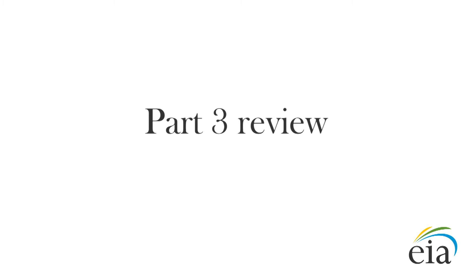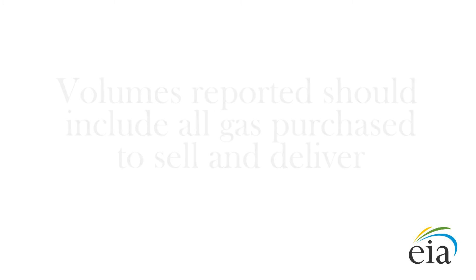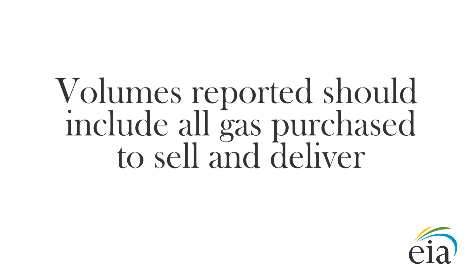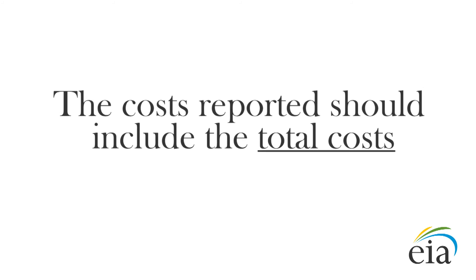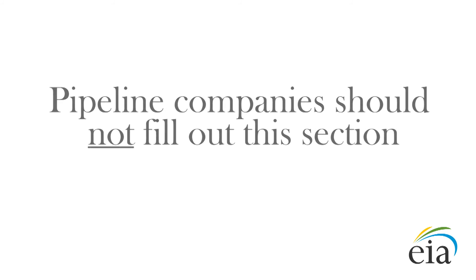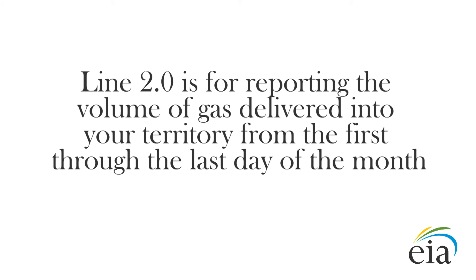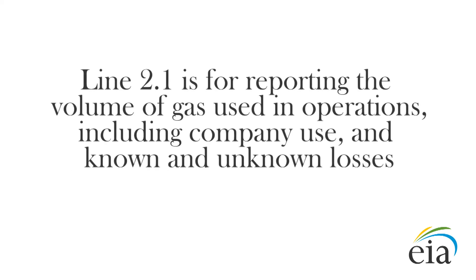Part 3 Review. Let's go over what we learned. Line 1 of Part 3 asks for the purchased gas in your distribution service area. The volumes reported in this section should include all gas your company purchased to sell and deliver to its customers. The costs reported in this section should include the total costs. Pipeline companies should not fill out this section. Line 2.0 is where you report the volume of gas delivered into your service territory from the first through the last day of the month. And Line 2.1 is where you report the volume of gas used in operations, including company use and known and unknown losses.